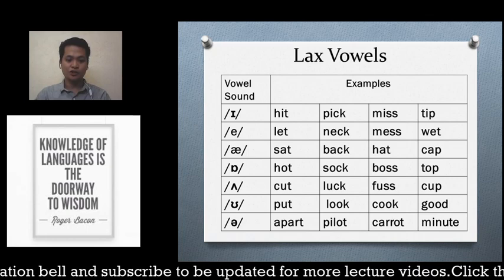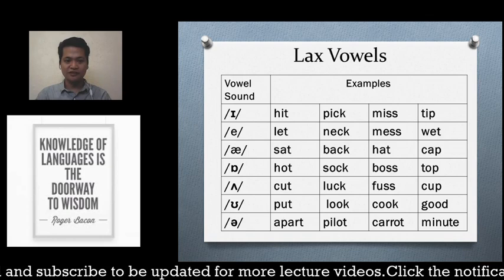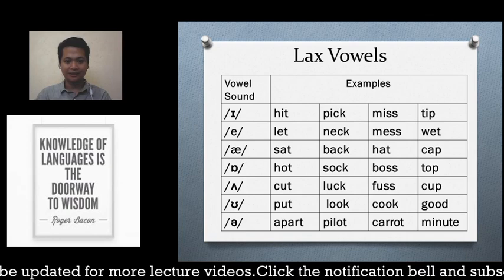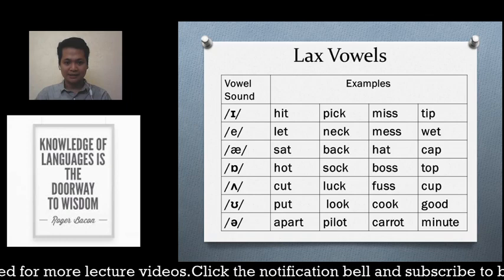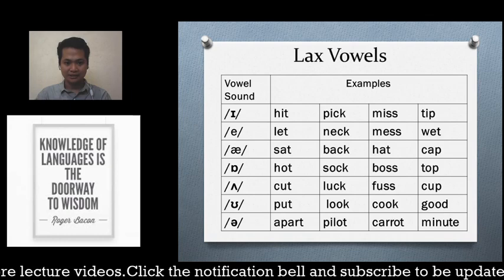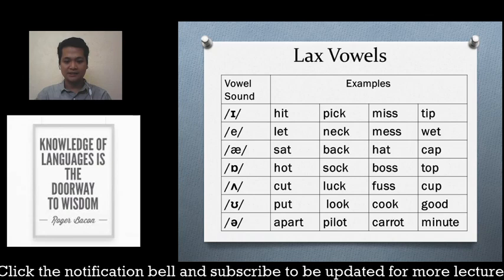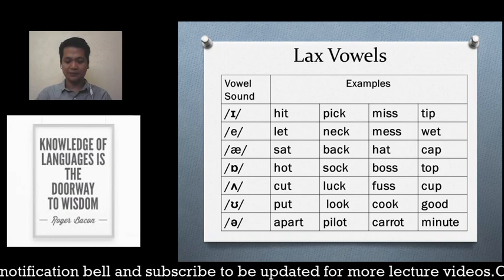The next sound is the schwa /ə/, which is always unstressed. Most sounds in English are actually schwa sounds. For example: pilot, carrot. In a neutralized accent, 'minute' is pronounced 'minute,' not the way it might be said in a regional Filipino accent.